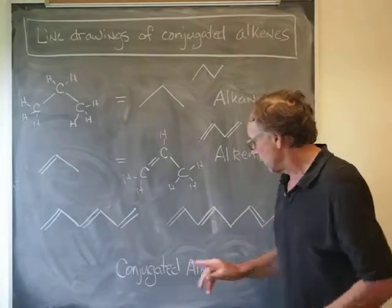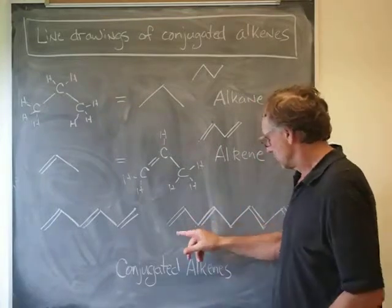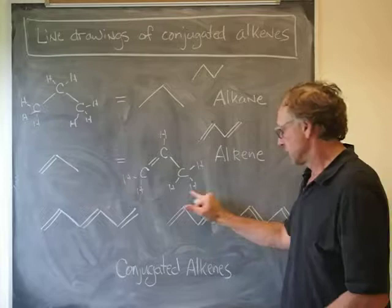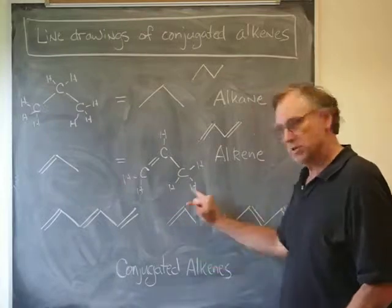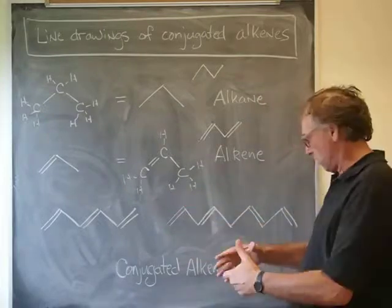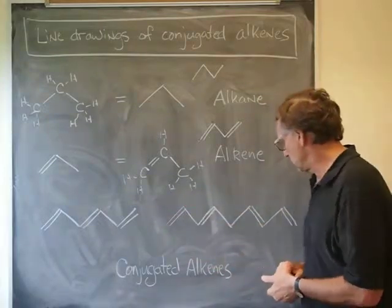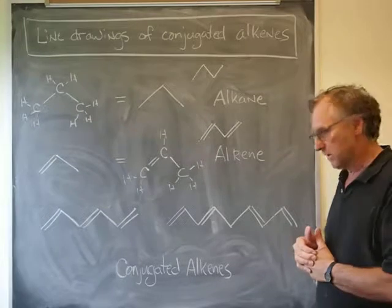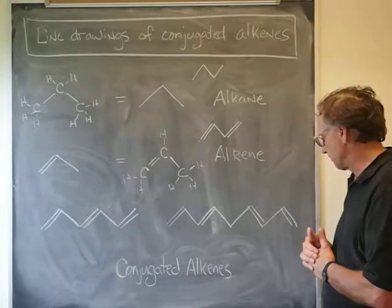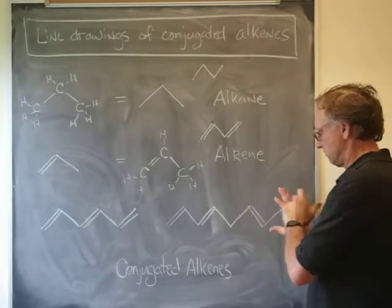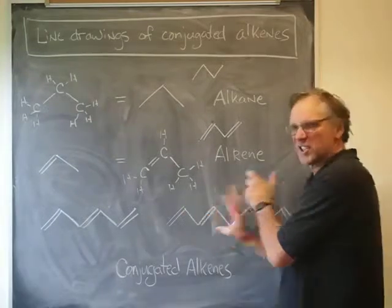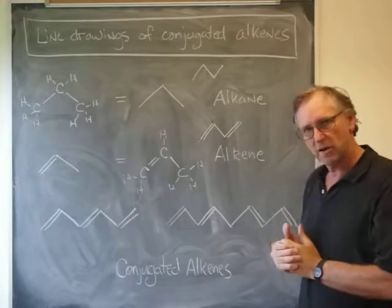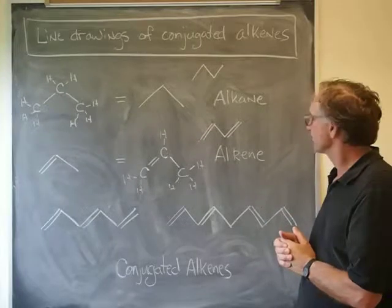For example, here I have two double bonds. This would form a conjugated part of that molecule, and this would form another conjugated part of that molecule, but they wouldn't be conjugated with each other — they wouldn't form one entire conjugated set.